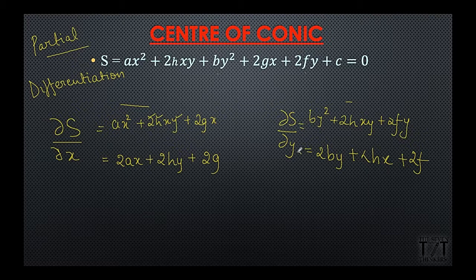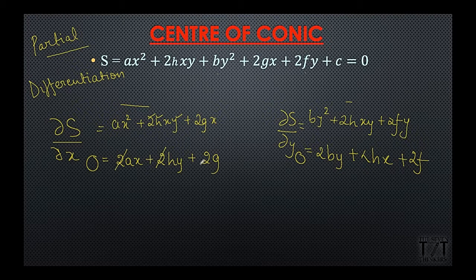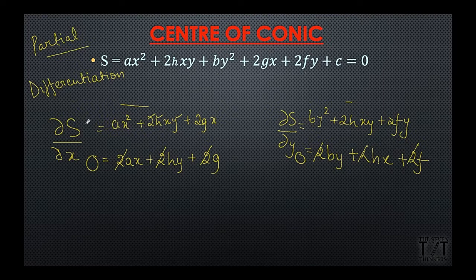To find the center, we equate these partial derivatives to 0. Setting them equal to 0 and cancelling the common factor of 2, we are left with: ax + hy + g = 0, and by + hx + f = 0.